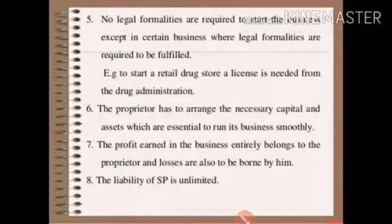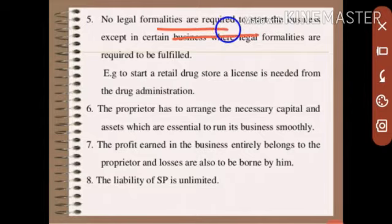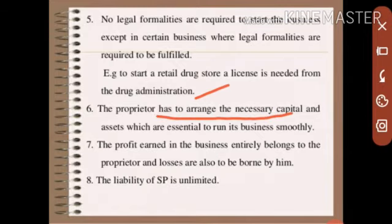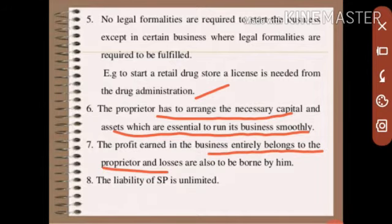No legal formalities are required to start this type of business. Normally a small business will start with small capital. For example, to start a retail drug store, a license is needed from the drug administration. Certain business formalities are required. The proprietor has to arrange the necessary capital and assets which are needed to run the business.